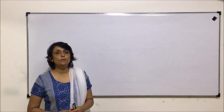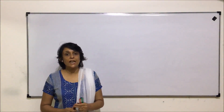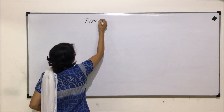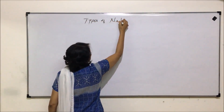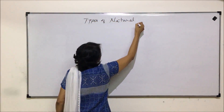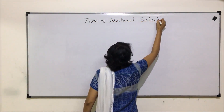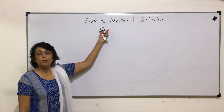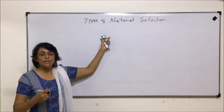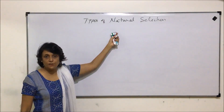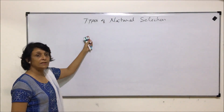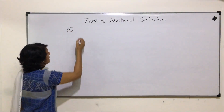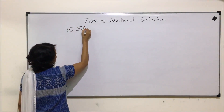In this video we will be discussing the types of natural selection — basically in which way nature selects. The first type of natural selection is known as stabilizing natural selection.